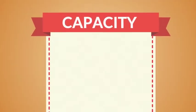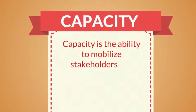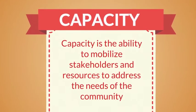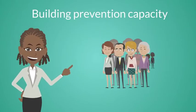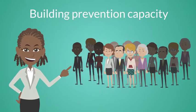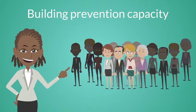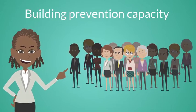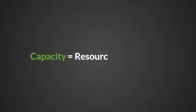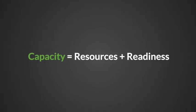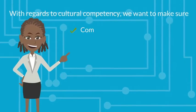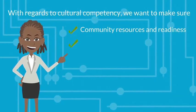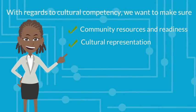The next phase is Capacity. Capacity is the ability to mobilize stakeholders and resources to address the needs of a community. Building prevention capacity is all about taking a look at personnel, knowledge, and skills, as well as community and organizational resources and readiness. In essence, capacity equals resources plus readiness. With regards to cultural competency, we want to examine community resources and readiness and check cultural representation.